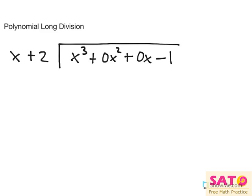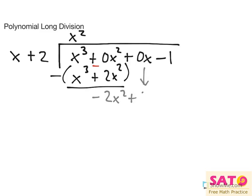What times x equals x cubed? That'd be x squared. x cubed plus 2x squared. Subtract that, and we would get negative 2x squared plus 0x.